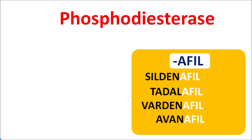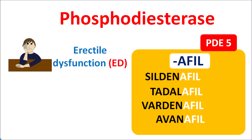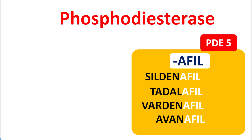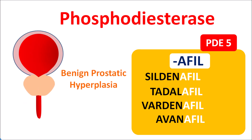These drugs can be used in the treatment of erectile dysfunction, as they produce relaxation of the corpus cavernosum. Similarly, sildenafil can also be used for the treatment of pulmonary hypertension — so sildenafil is used for both erectile dysfunction and pulmonary hypertension. PDE5 inhibitors can also be used in benign prostatic hyperplasia (BPH); in severe BPH, tadalafil can be used at a dose of 5 mg, particularly in patients having both erectile dysfunction and BPH.